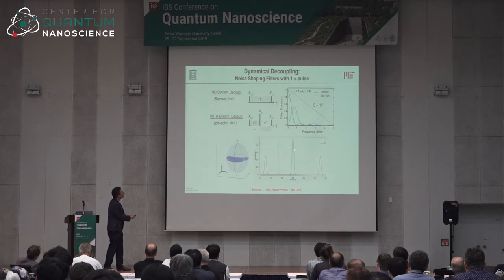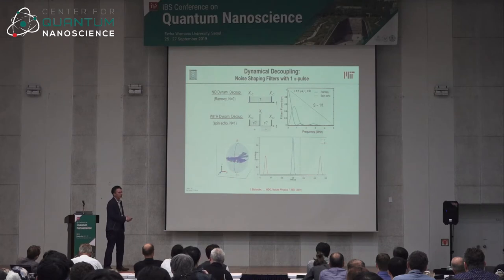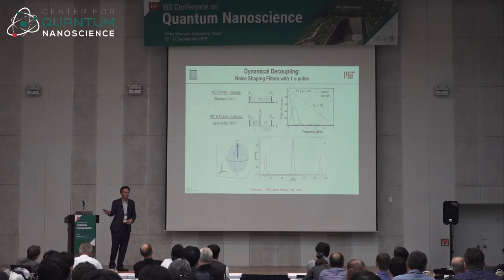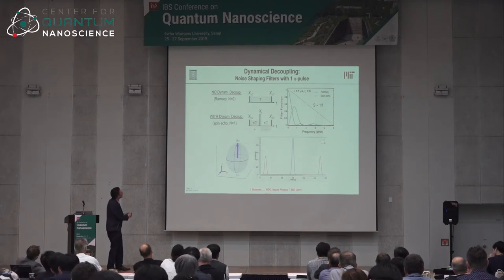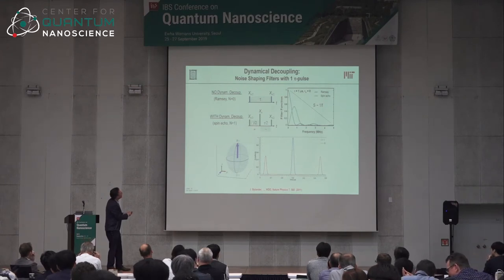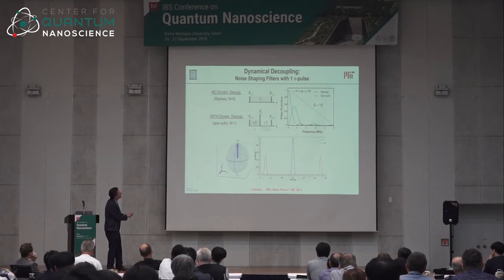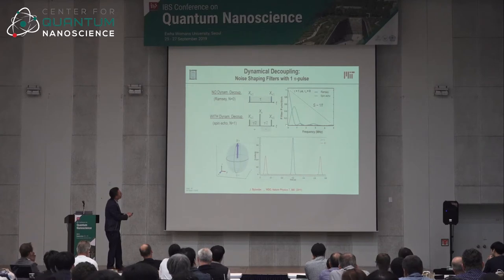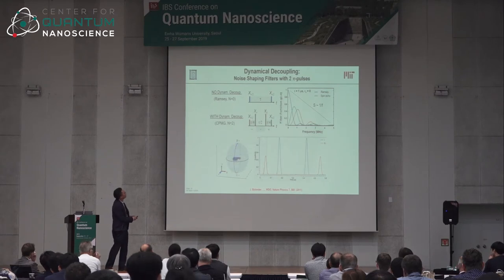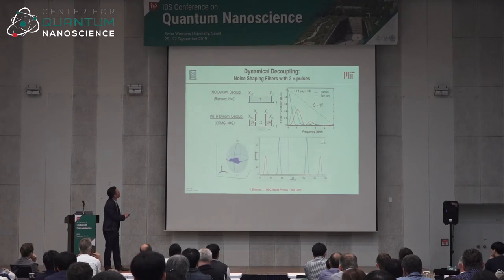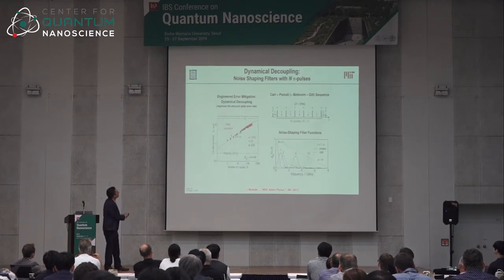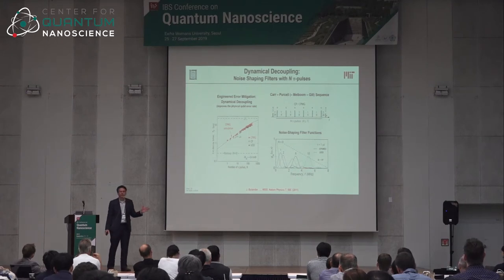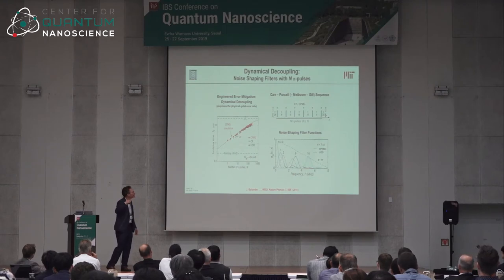Applying a pi pulse right in the middle of the evolution flips everything around: vectors that were advancing faster now catch up with those going slower, and they refocus. Analyzing this: there's a positive and negative rectangle function whose Fourier transform is now centered at higher frequency with a zero at zero frequency — note that for later. Adding more pulses pushes this filter to even higher frequencies, suppressing low-frequency noise more strongly. With enough pulses, you can beat back dephasing until you're limited almost entirely by equatorial relaxation — this is dynamical decoupling, like lacrosse cradling.